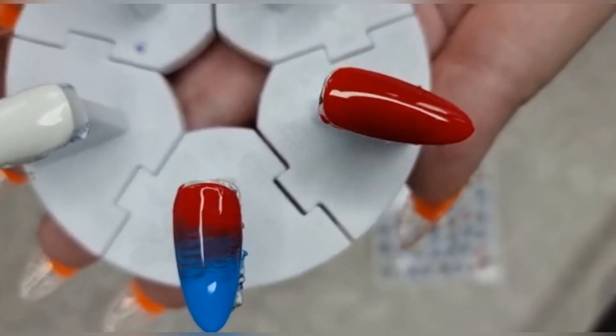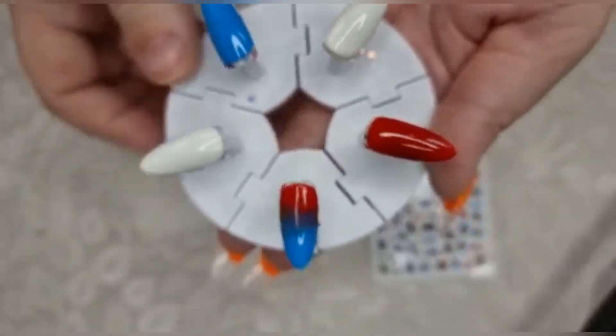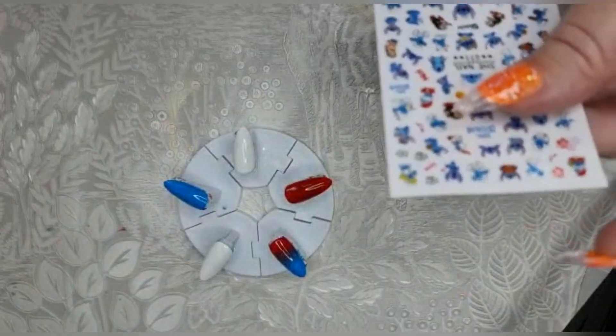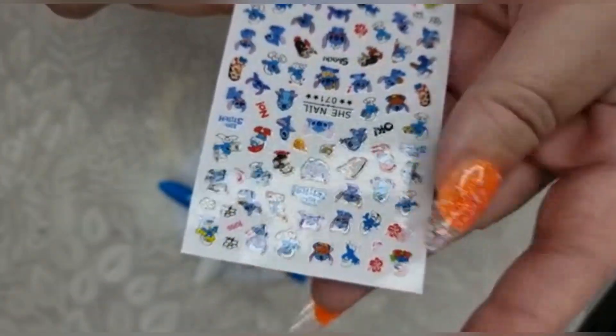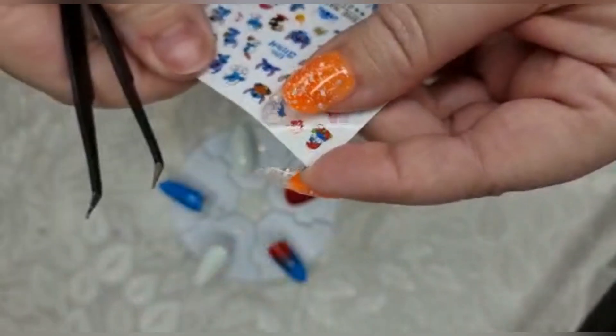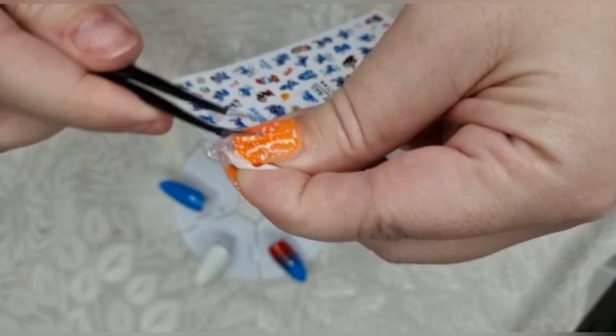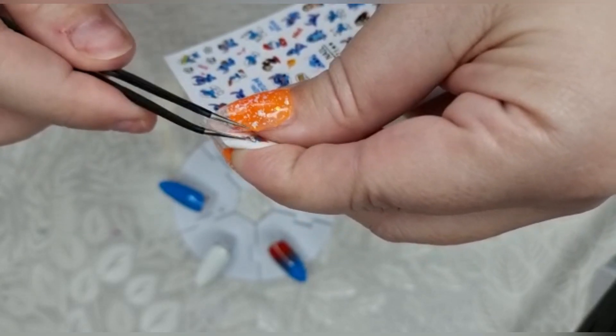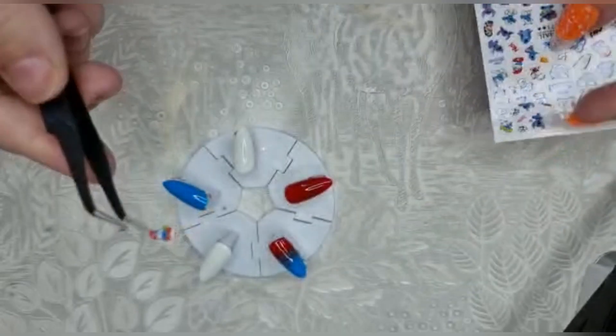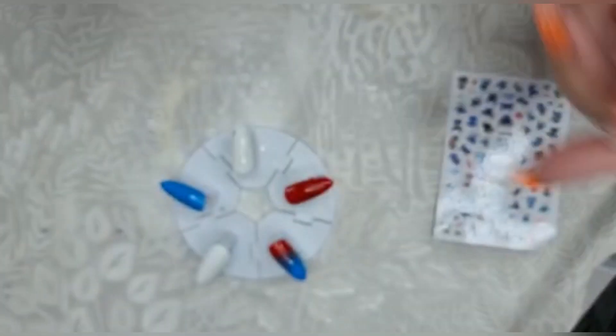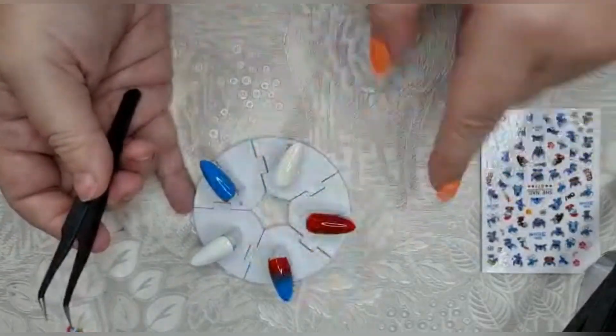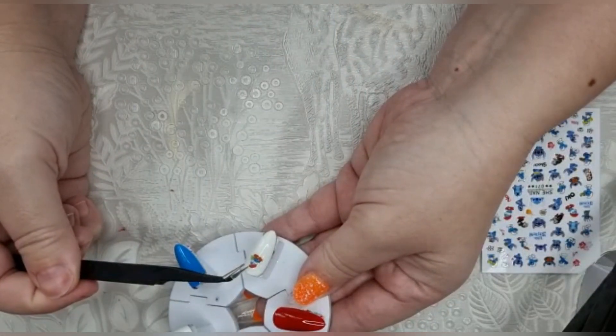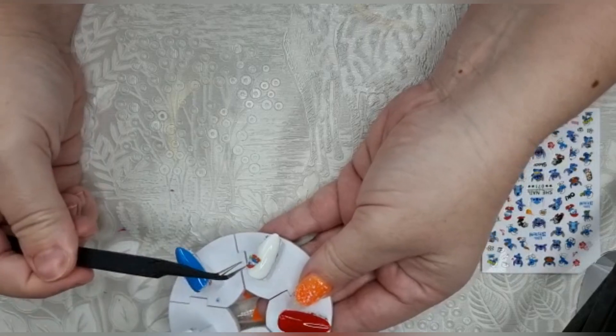Right, so we'll start with these little guys here. We've got this top one here, so we'll just peel this off. They're only very very tiny stickers, which is why I've just done them on a short oval set.